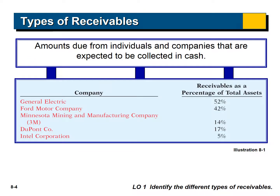To give you an idea of how big an asset receivables are for some companies: Ford Motor Company, which you know well, has 42 percent of their total assets — that includes property, plant, equipment, cash, inventory, and all other assets — as just receivables.